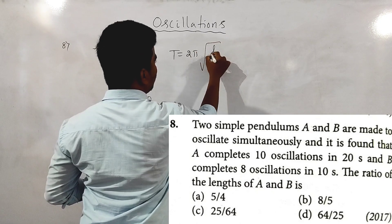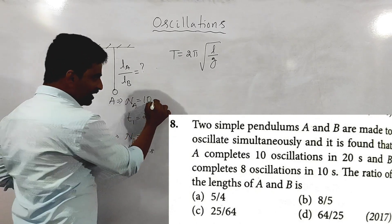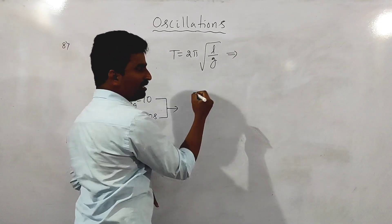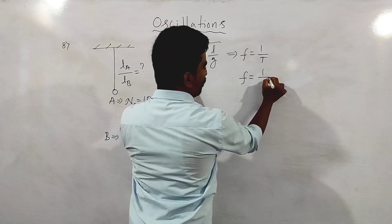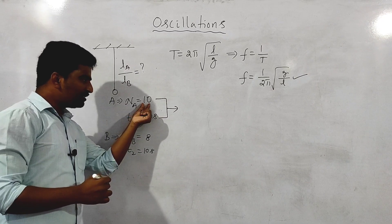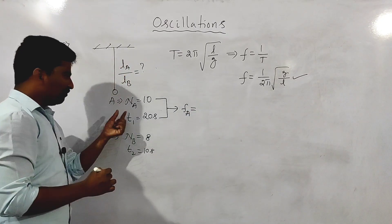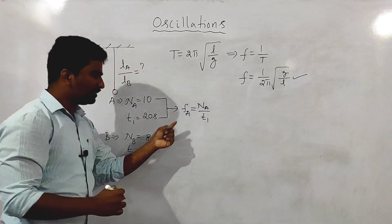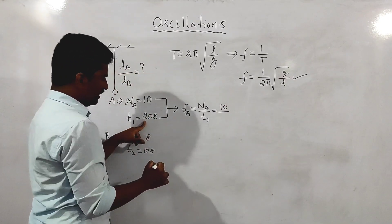The time period of a simple pendulum is 2 pi times the square root of L divided by G. Since frequency equals 1 divided by time period, frequency equals 1 over 2 pi times the square root of G divided by L. Frequency also equals number of oscillations divided by time taken. So frequency of A equals 10 divided by 20, which is 1/2. Frequency of B equals 8 divided by 10, which is 4/5.